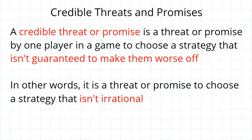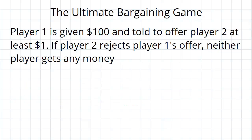You would say that would be irrational — you're not going to actually do that. So a credible threat or promise is a threat or promise to choose a strategy that isn't irrational. To illustrate, we introduce the ultimatum bargaining game.